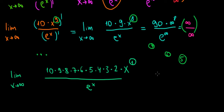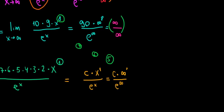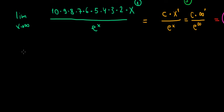Did all this work actually get us somewhere? What we have is that large product of constants times x to the power of 1 divided by e to the power of x. If we multiply that constant by infinity to the power of 1 over e to the power of infinity, we still get a very large number over a very large number — still infinity over infinity, still undefined. Our last chance is to differentiate one more time.